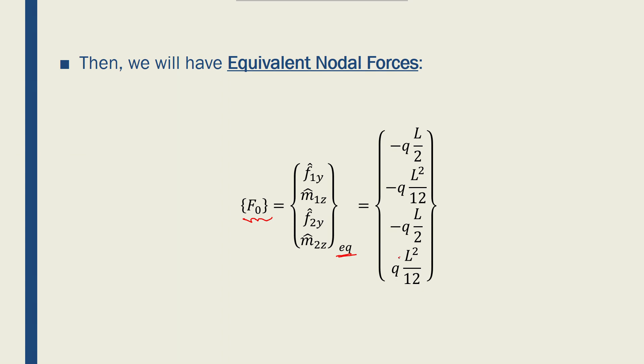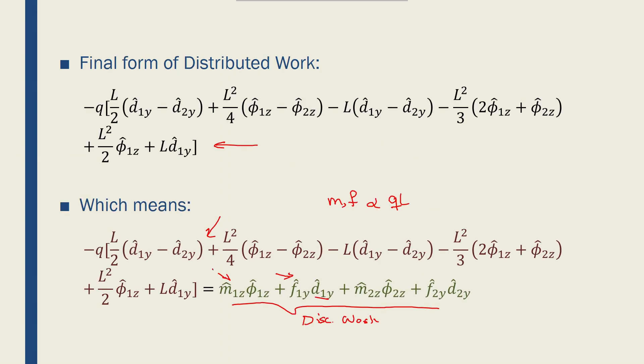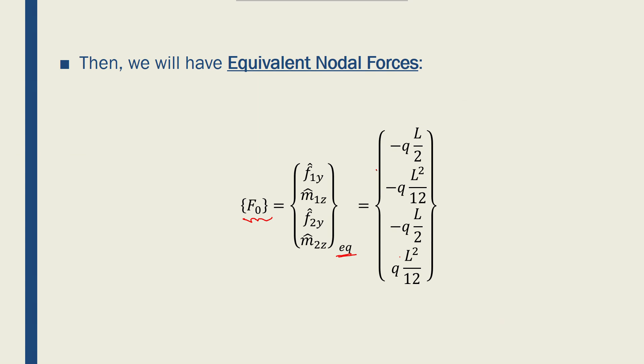What I have done is to expand this equation so that I will only have one of each term: d1y, d2y, phi1z, and phi2z. And then, by simplifying that, I find the equivalent of these nodal forces. That's why it's called equivalent nodal forces. Now, we'll use this equivalent nodal force to continue solving for a beam which has distributed forces applied to it.